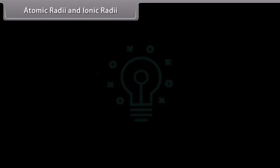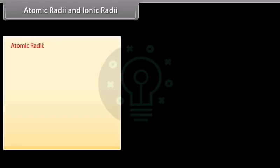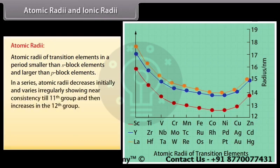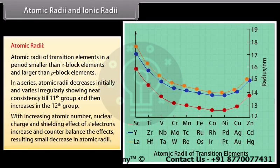Atomic radii of transition elements in a period are smaller than S-block elements and larger than P-block elements. In a series, atomic radii decrease initially and vary irregularly, showing near consistency till the 11th group and then increase in the 12th group. With increasing atomic number, nuclear charge and the shielding effect of D-electrons increase and counterbalance each other, resulting in a small decrease in atomic radii. In zinc, cadmium, and mercury, there is an increase in atomic radii due to electron repulsion exceeding the nucleus's outermost shell attraction.